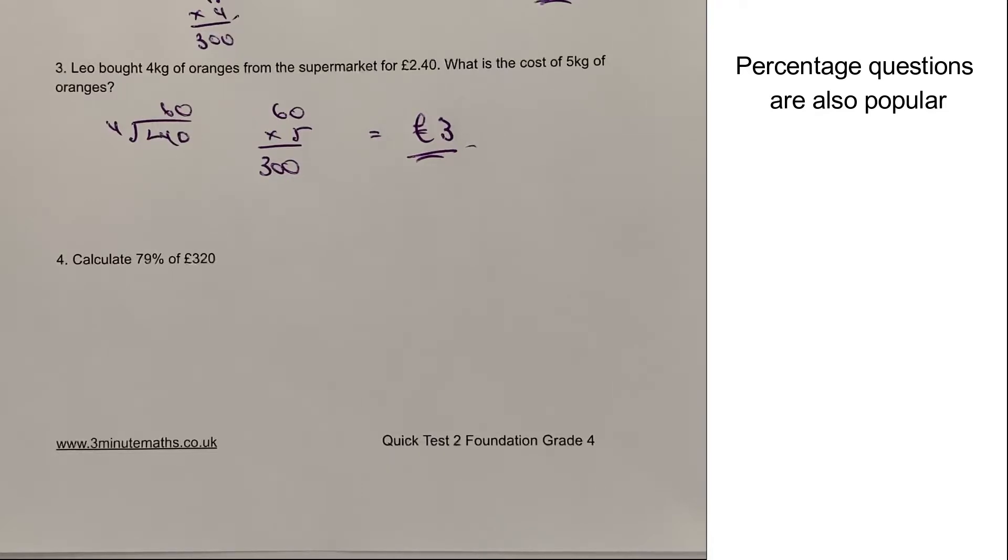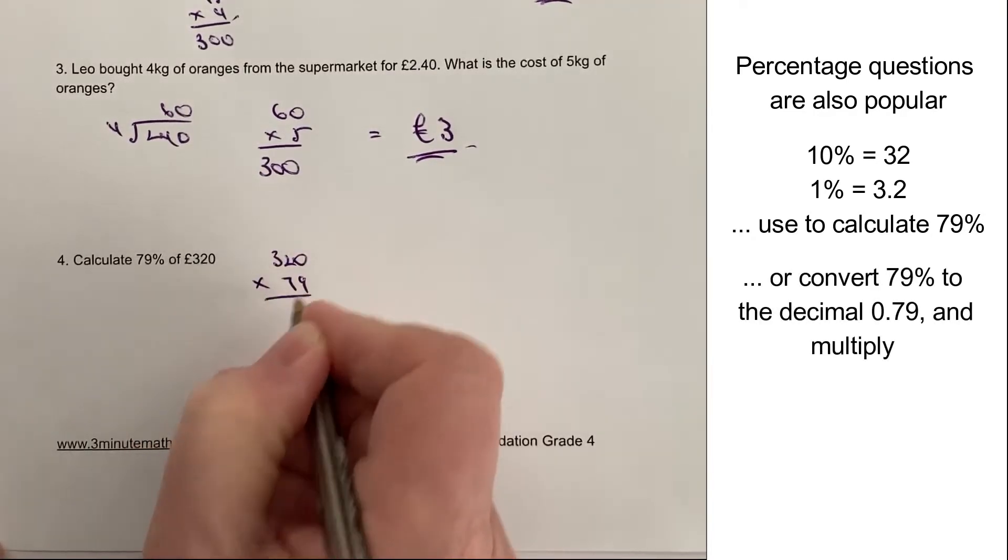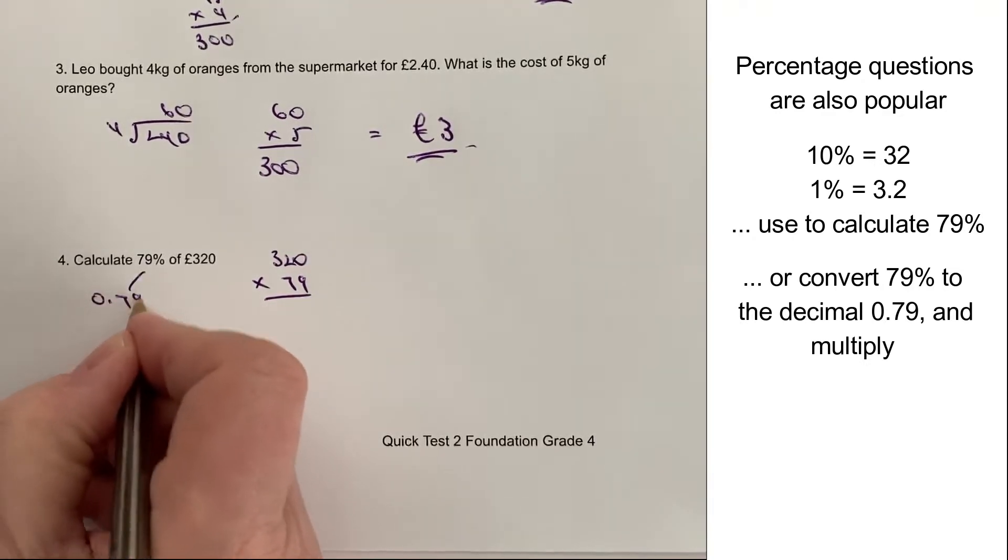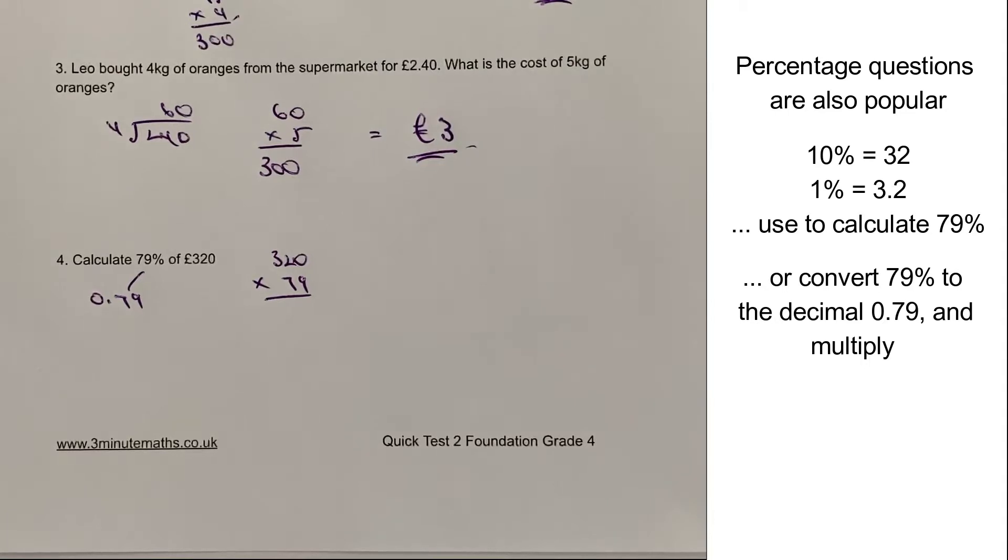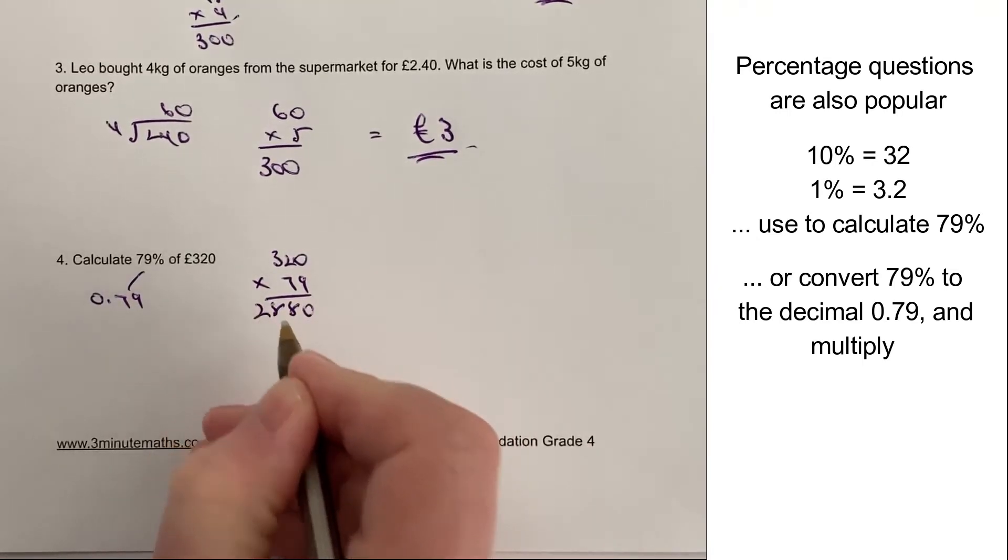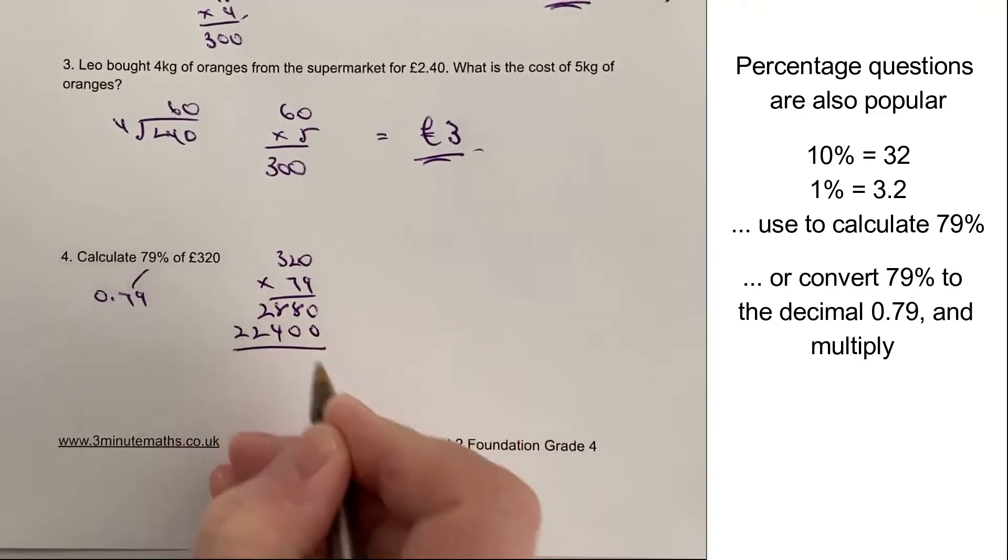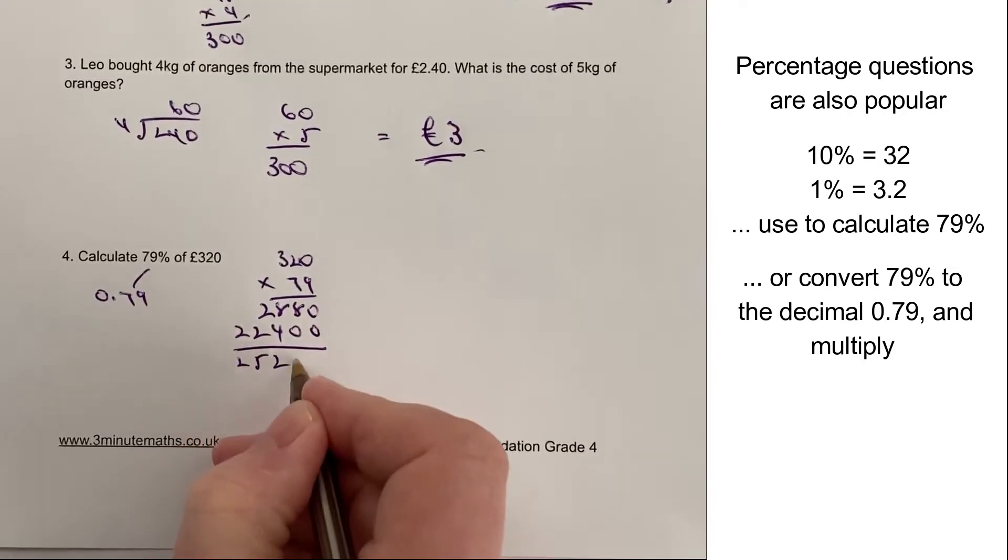Question number four, 79%. So it's one of those difficult ones. You can either work out 10% and 1% and add them all up and go from there. Or what I would do personally is I would simply do the calculation 320 multiplied by 79. Because don't forget, 79% is exactly the same as saying 0.79 as a decimal. So therefore, if I make this calculation, then I can just move the decimal point in order to make it a calculation of 0.79. Okay, so what we get with this is nine times nothing.